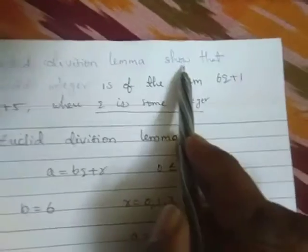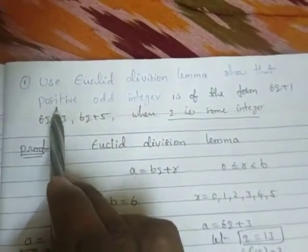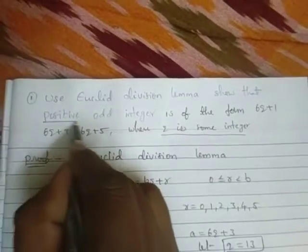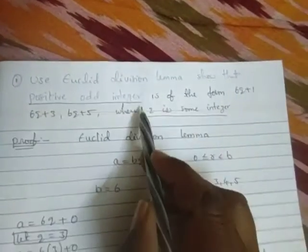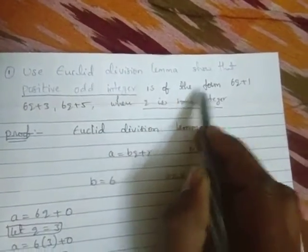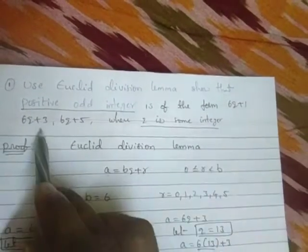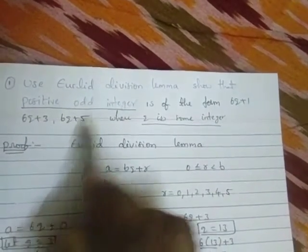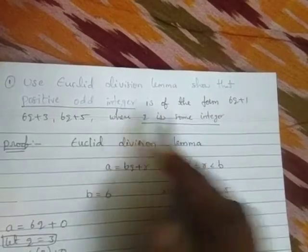Euclid Division Lemma: Show that positive odd integer is of the form 6q+1, 6q+3, 6q+5 where q is some integer. This is the question. Proof: